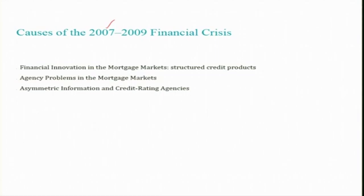About the causes of the 2007-2009 crisis, there is debate on what caused it. However, most arguments point to financial innovation in the mortgage market as one of the reasons. Financial innovation led to financial engineering, and the development of new sophisticated financial instruments led to structured credit products in the financial markets.